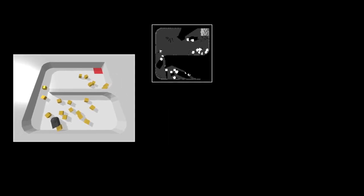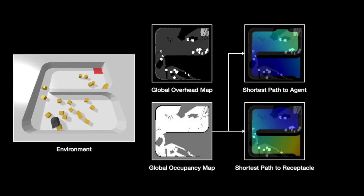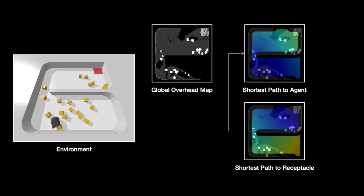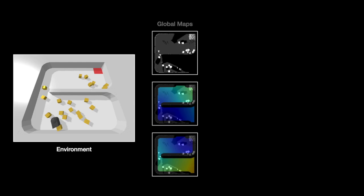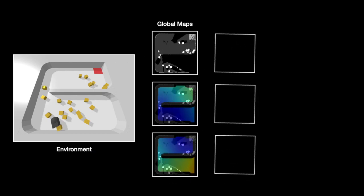The agent also builds up an occupancy map, which is used to compute global shortest path distance maps. To construct the agent's state representation for reinforcement learning, we take oriented crops of the global maps to generate local maps.